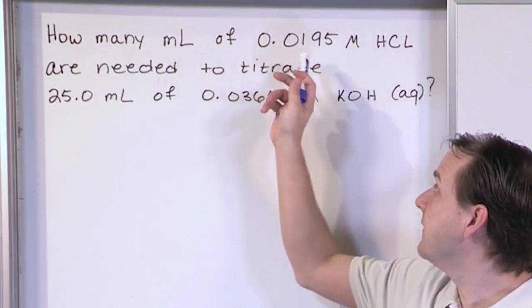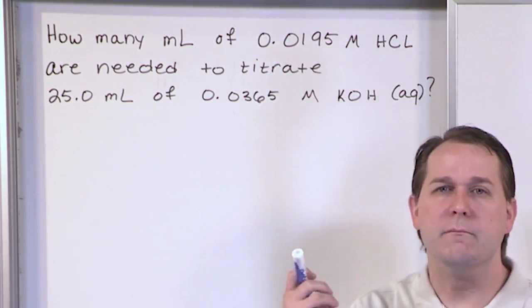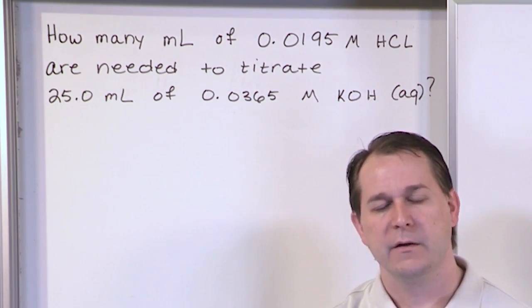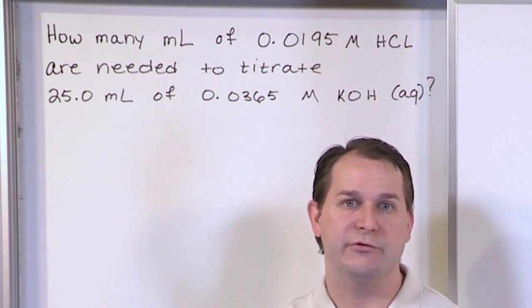So that means that in this flask or in this container, 0.0195 moles of hydrochloric acid for every liter of solution. So you need to think about molarity in terms of moles per liter. It really helps you understand what you're trying to do.